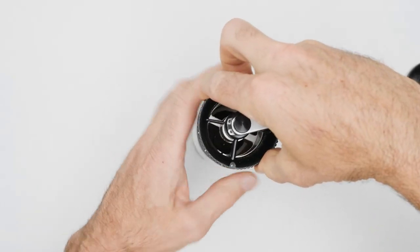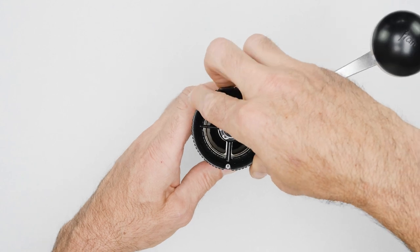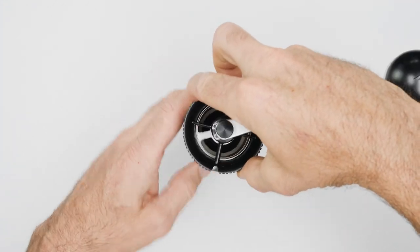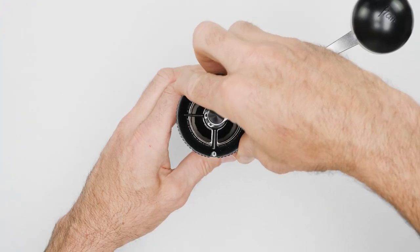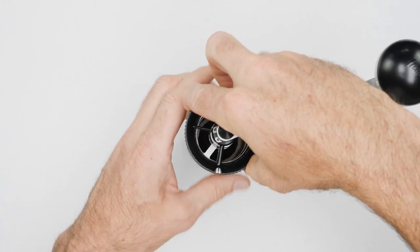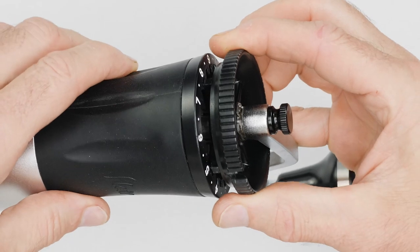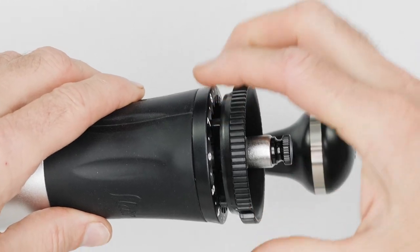The first full rotation from zero brings you to the twenty-fourth position. Two full rotations take you to the forty-eighth position. Three full rotations take you to the seventy-second position. Past here, the two parts will begin to rub on one another.